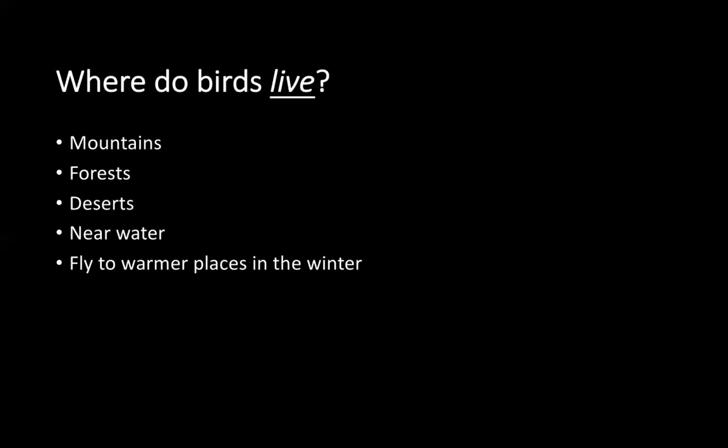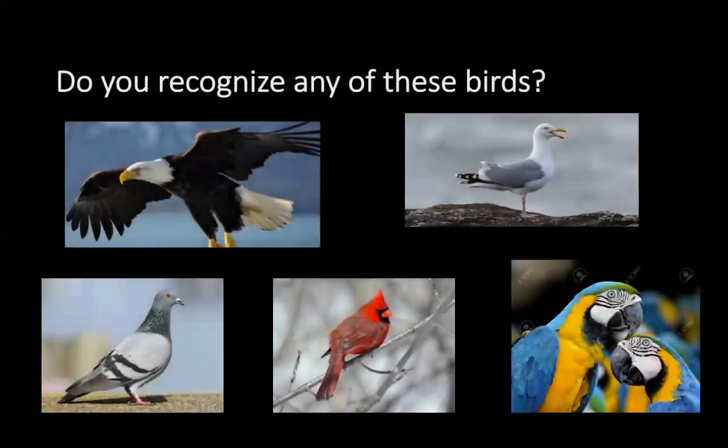Where do birds live? Birds live in diverse habitats — mountains, forests, deserts, or by the water. They usually fly to warmer places in the winter as well. Do you recognize any of these birds? Some examples are eagles, pigeons, seagulls, cardinals, and parrots. There are many other kinds of birds. If you can think of one, pause the video and write it down in your notebook.